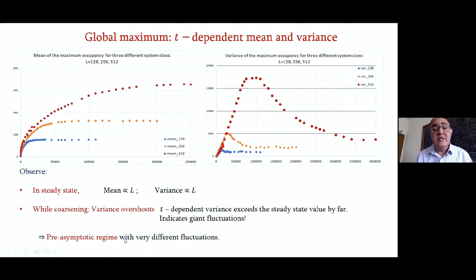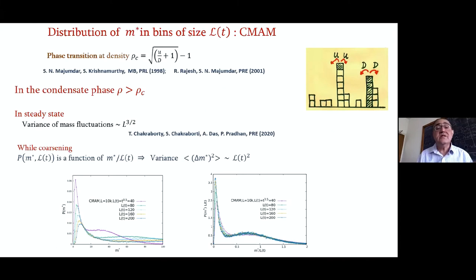What's happening? The time dependent variance exceeds the steady state value through some giant fluctuations. So the state, while coarsening, is determined not by the steady state, but by this pre-asymptotic regime with very different fluctuations.